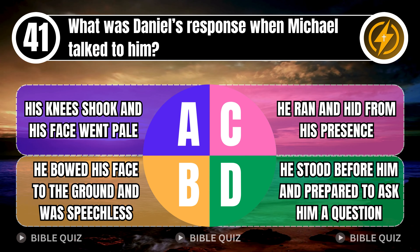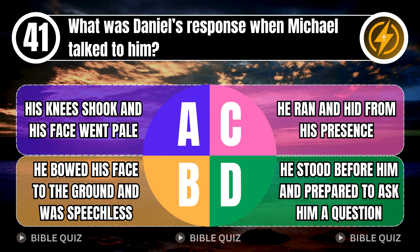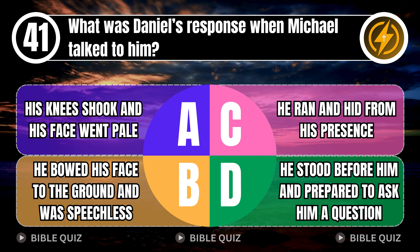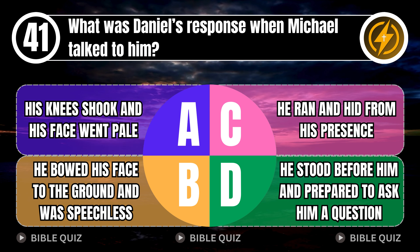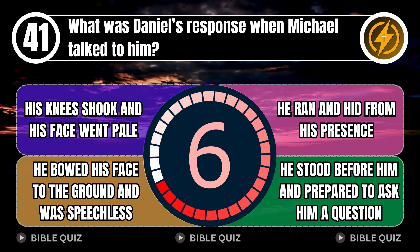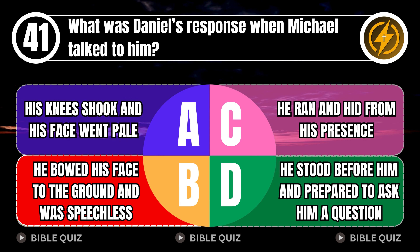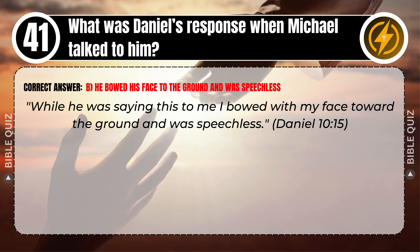Question 41: What was Daniel's response when Michael talked to him? A. His knees shook and his face went pale. B. He bowed his face to the ground and was speechless. C. He ran and hid from his presence. D. He stood before him and prepared to ask him a question. Correct answer: B. He bowed his face to the ground and was speechless. While he was saying this to me, I bowed with my face toward the ground and was speechless. Daniel 10 verse 15.